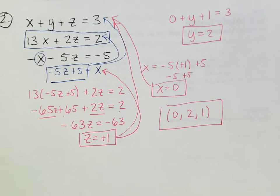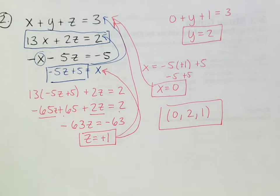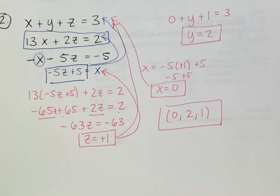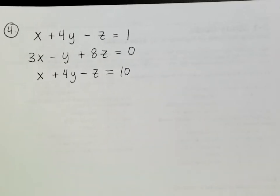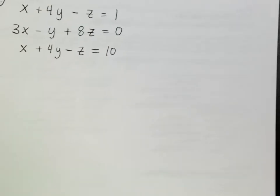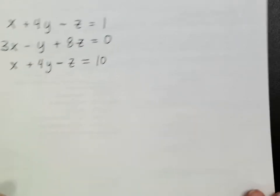I'm going to skip question 3. Question 3 already has z solved for itself as z = 1. If you just plug that 1 into the top equation, you now have a two-variable system and can solve for both x and y.